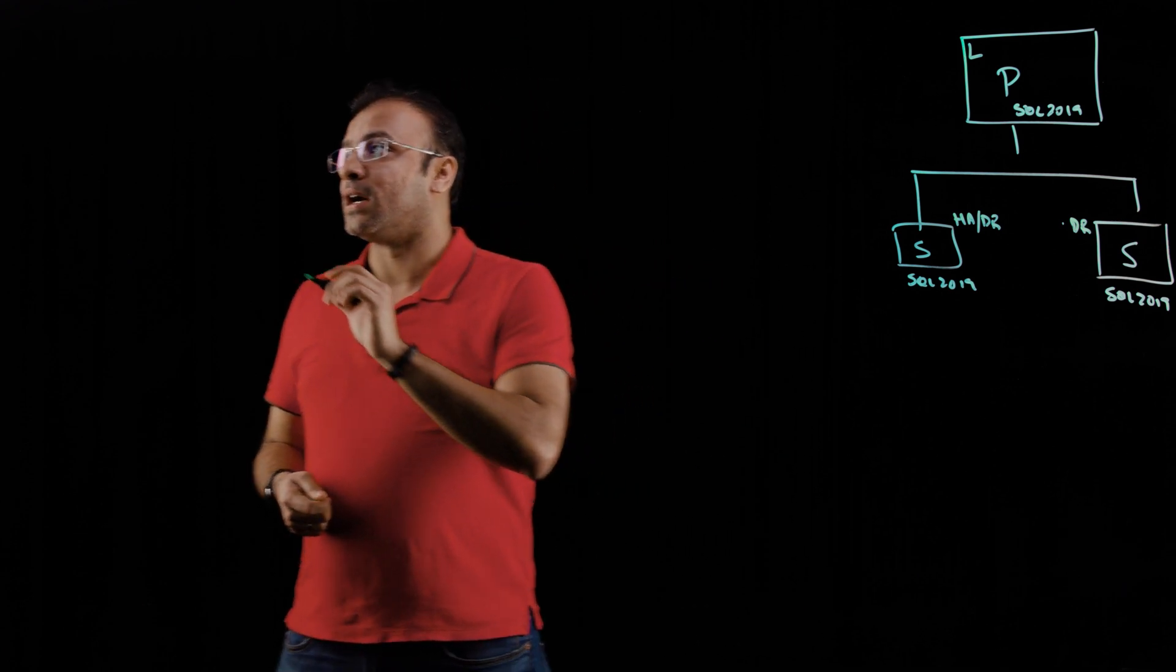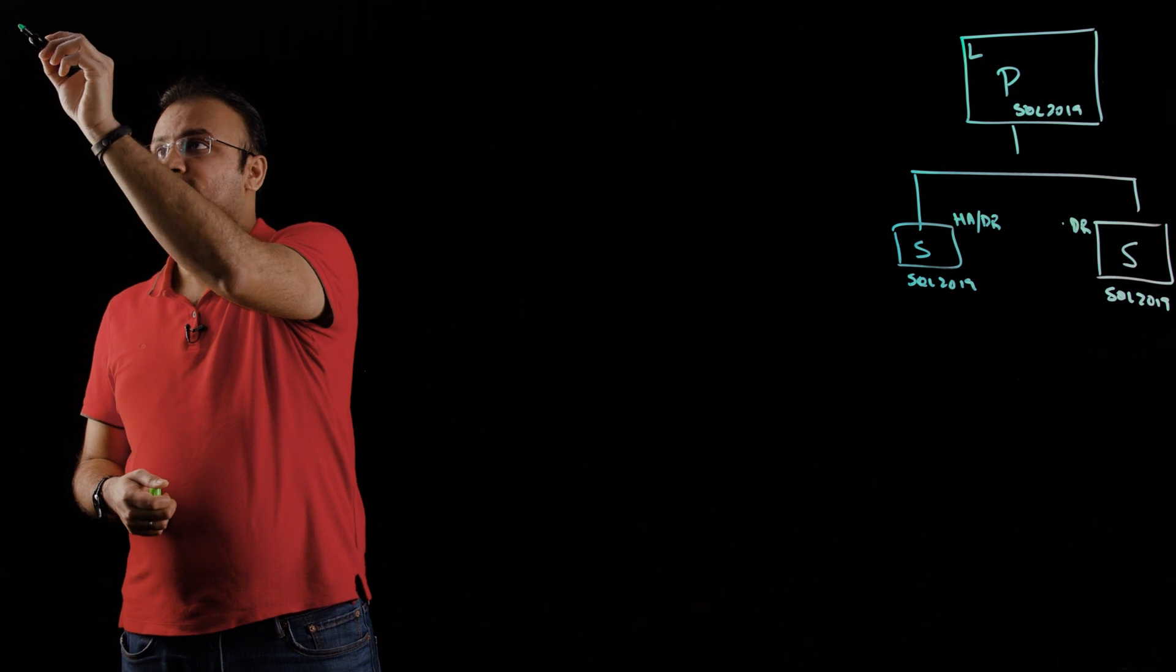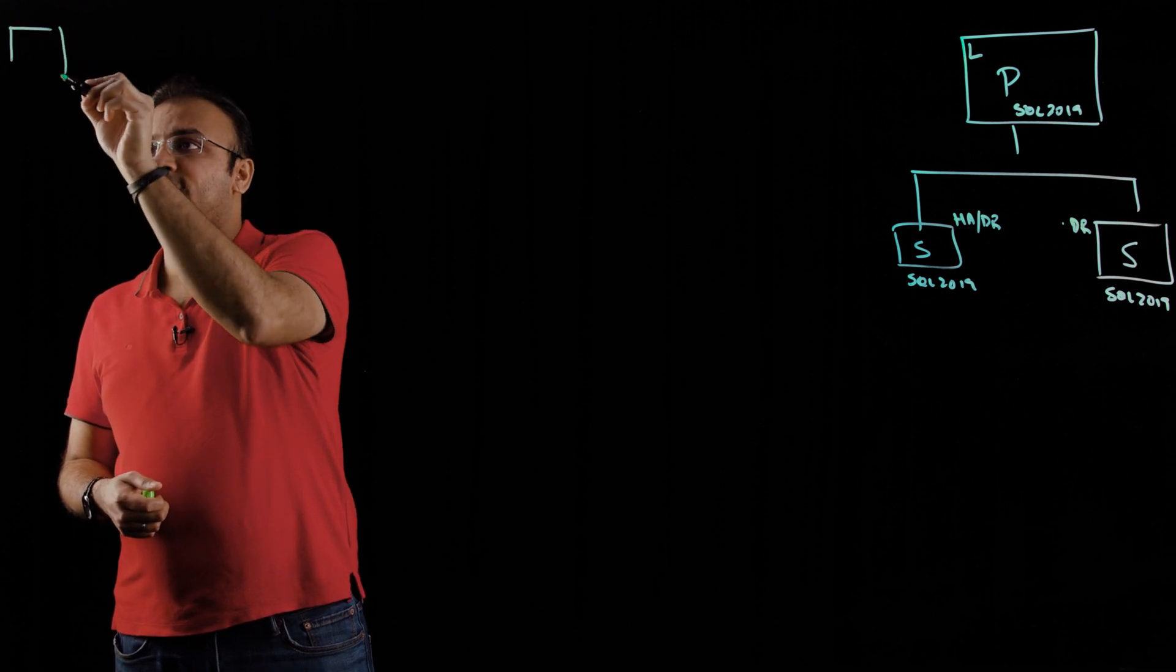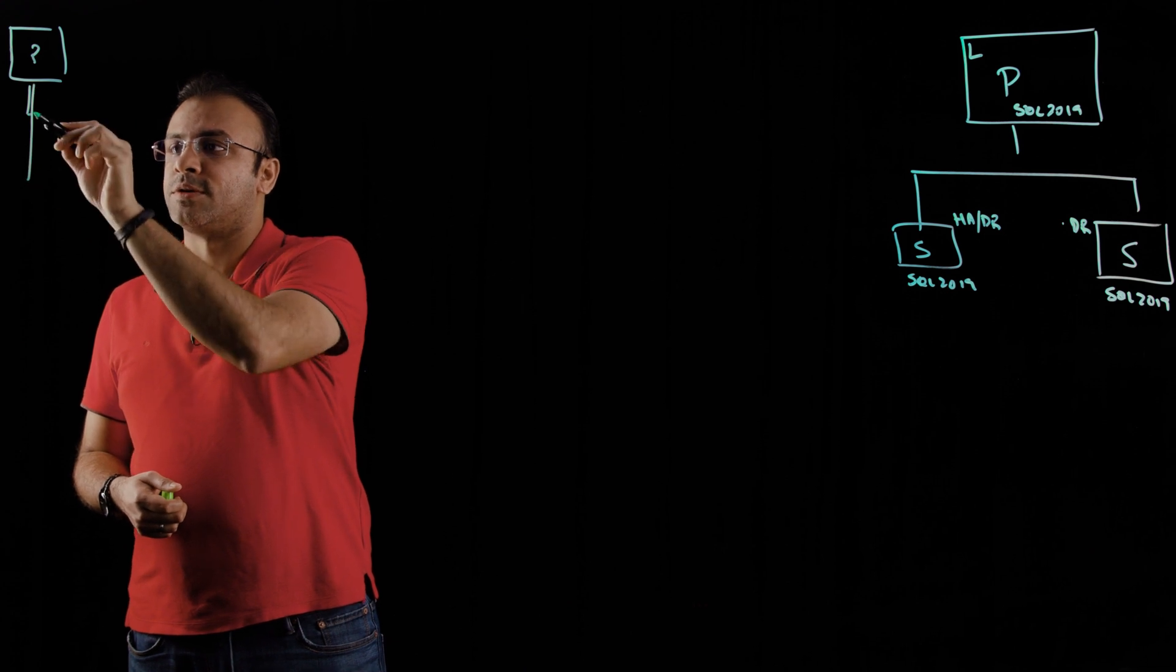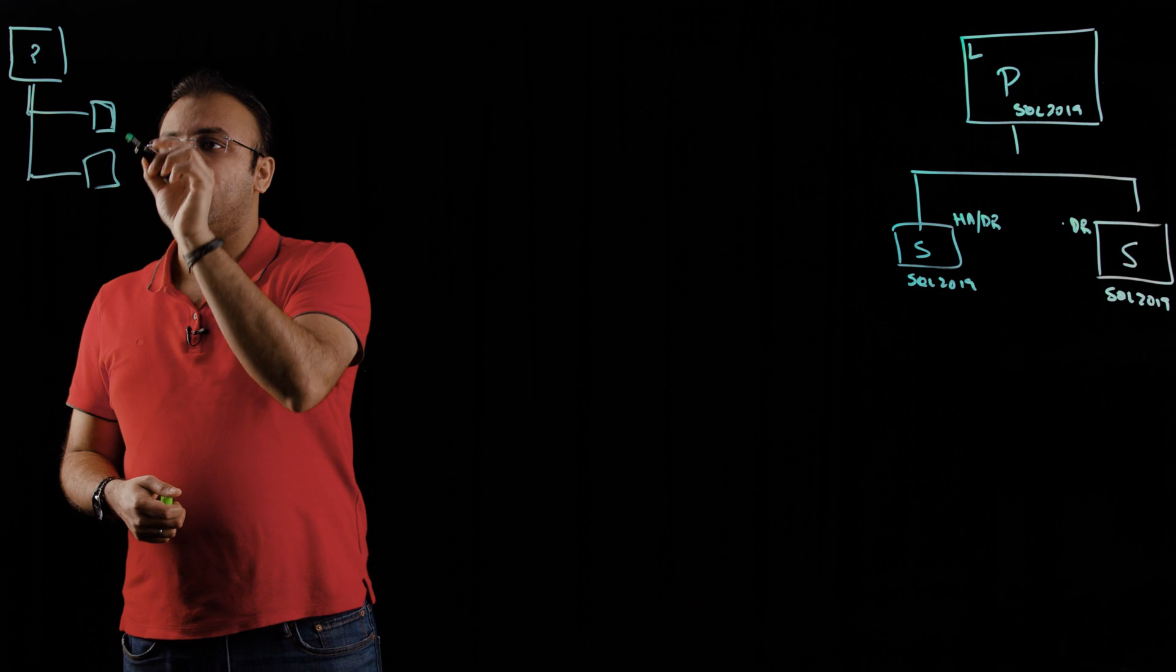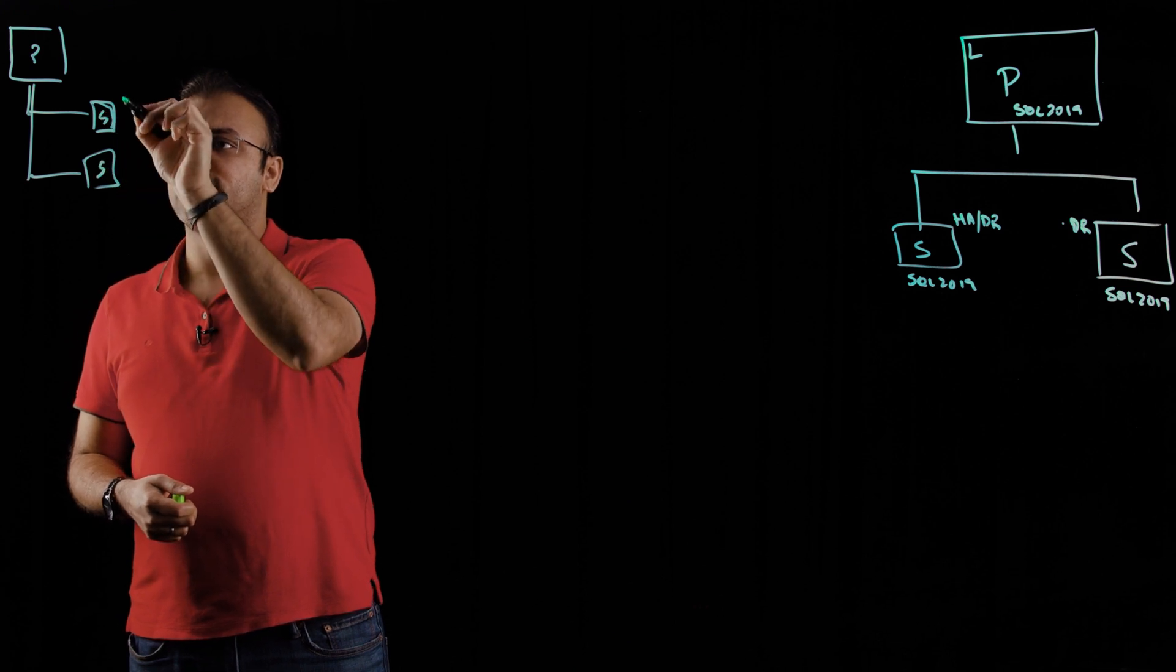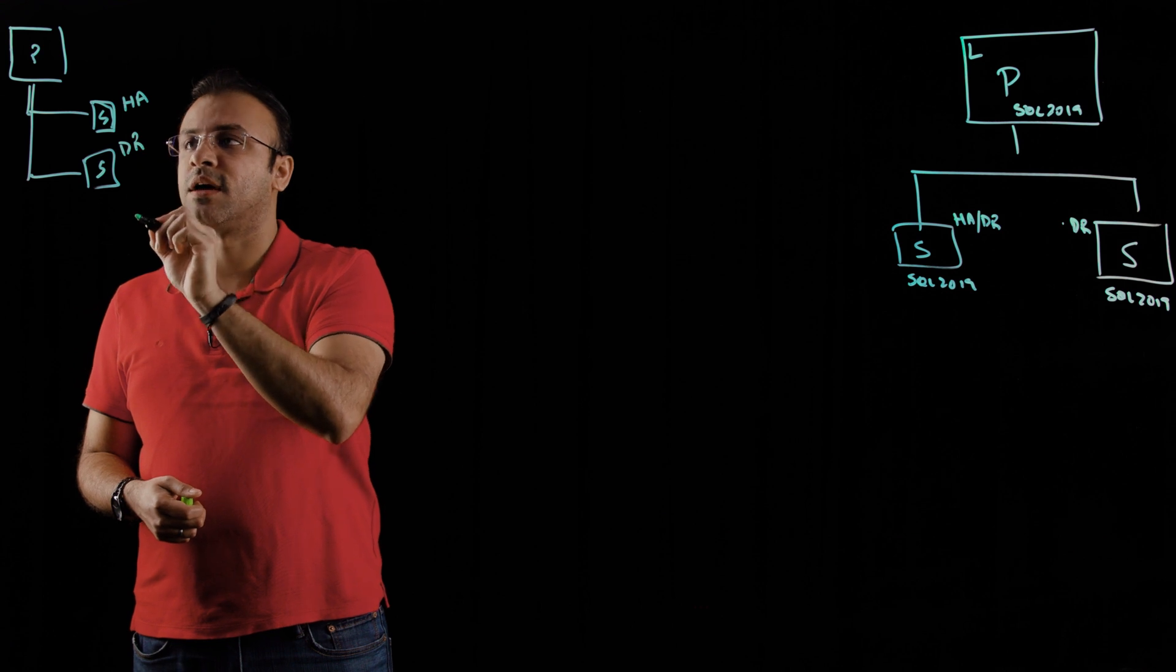Starting with SQL Server 2019, and this applies to all older versions of SQL Server as well, if you have the same architecture, if you have a primary, and now I'm just going to draw this right aligned so that it's a little easier to understand. You have multiple secondaries. Let's say this is used for high availability, and this is used for disaster recovery.